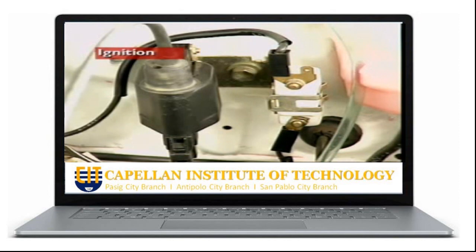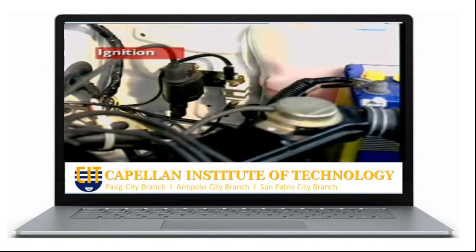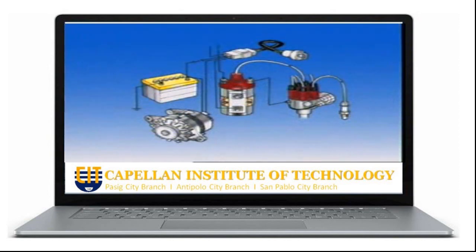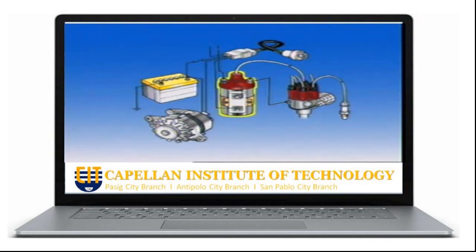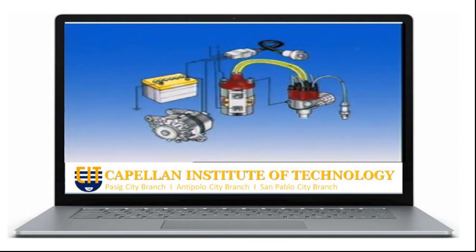This section examines ignition. A basic ignition system consists of the battery, low tension cables, the ignition coil, distributor, coil high tension cable, spark plug cables, and spark plugs.